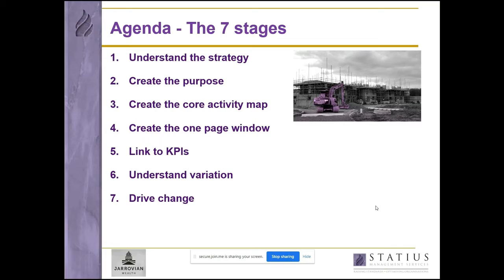Create the core activity map — essentially a picture of what you do, showing the sequence of activities you employ to deliver value to your customers. It's a cut through the traditional picture of an organization, the family tree. Create the one-page window: the core activity map is the central component of this, usually a single A4 sheet.